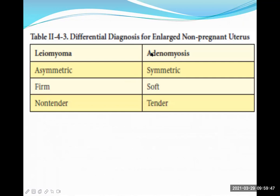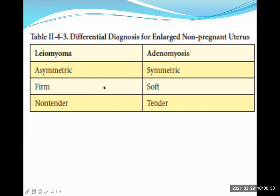In summary, the differential diagnosis of enlarged non-pregnant uterus includes leiomyoma and adenomyosis. The key difference: leiomyoma leads to asymmetrical uterine enlargement with a firm, non-tender feel (except in red degeneration, when it is very tender). Adenomyosis leads to diffuse, symmetrical, globular, soft but tender uterine enlargement. Ultrasound or MRI can differentiate between the two conditions.